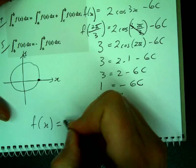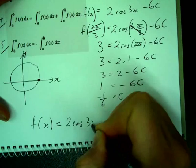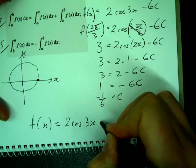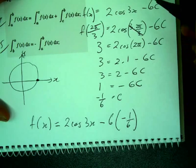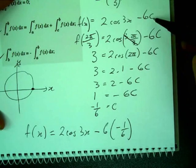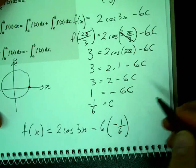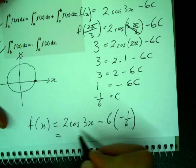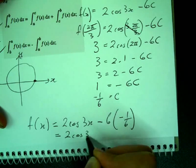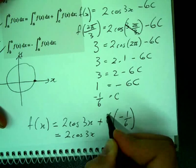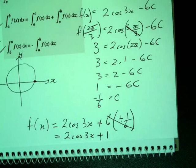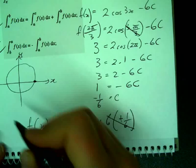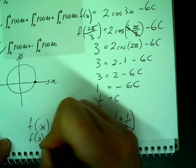So what's my function? f(x) is now equal to 2 cos 3x minus 6 times negative 1 over 6. Remember it was negative 6c, and that gives me, that goes away they cancel, plus 1, yeah? Can you see how that all goes together?